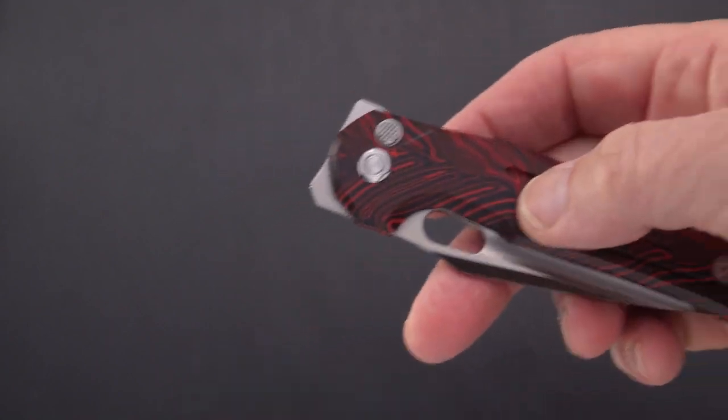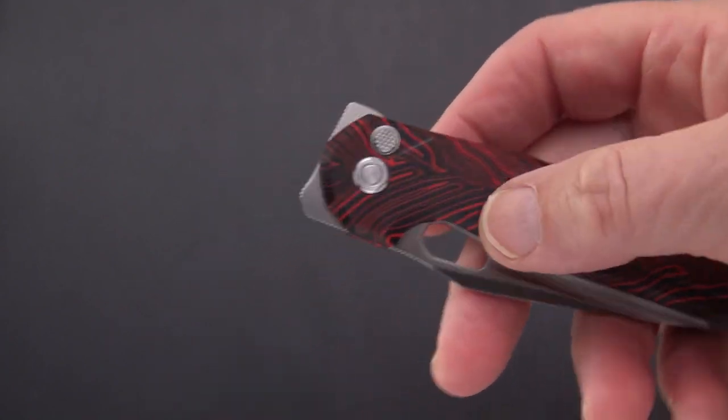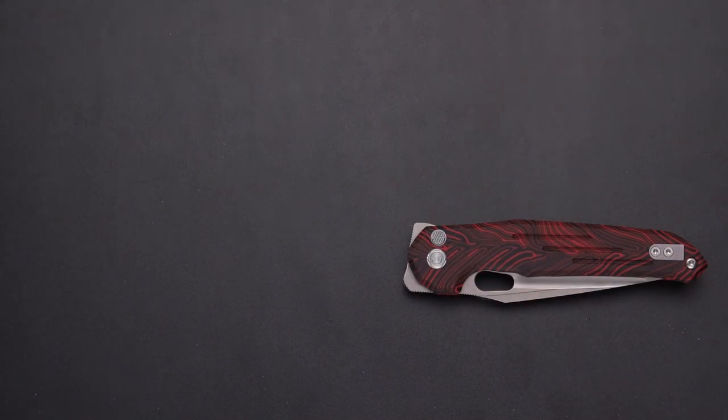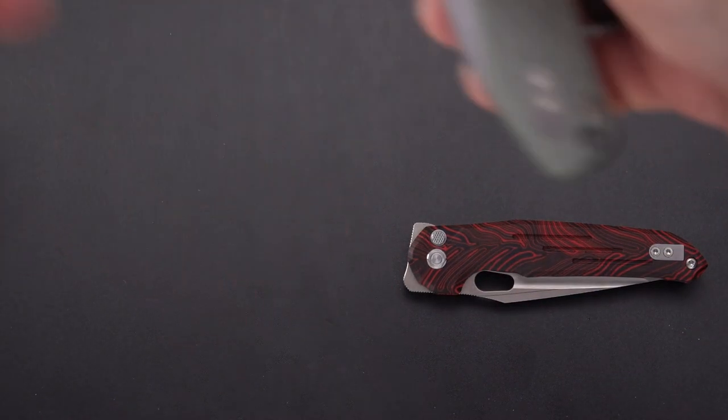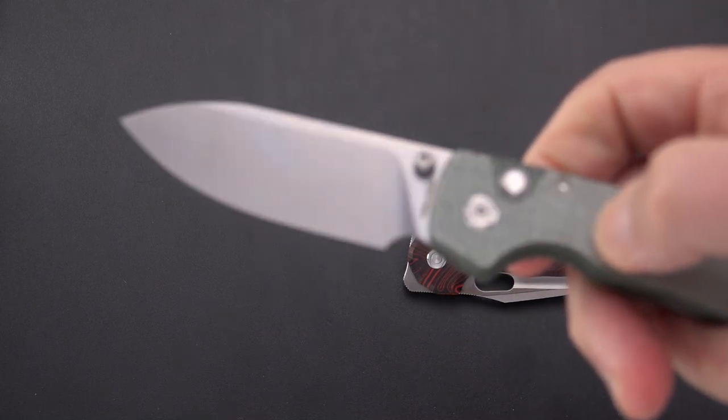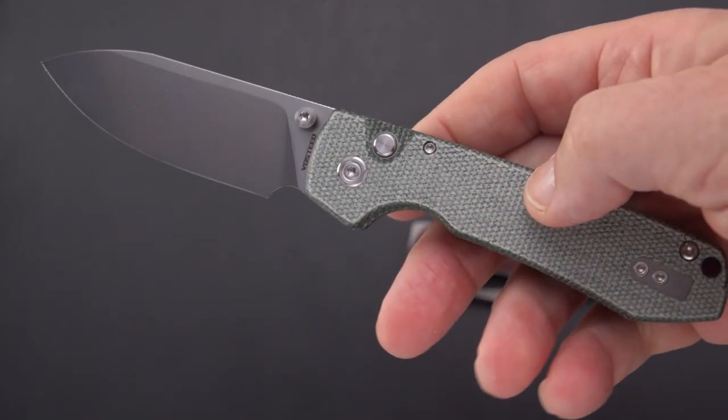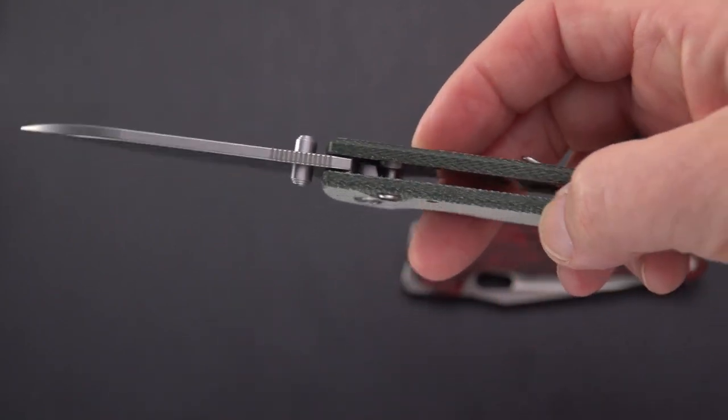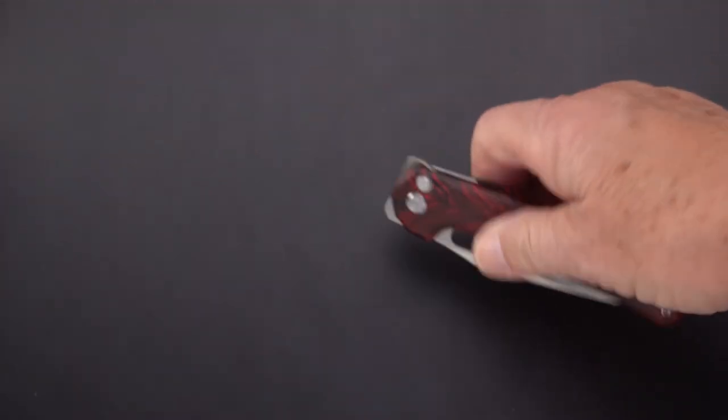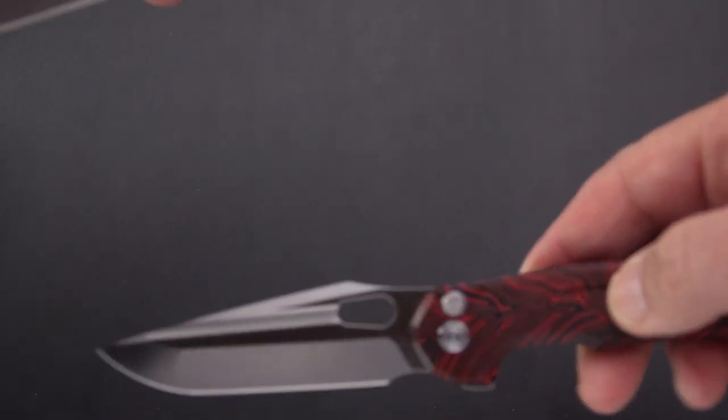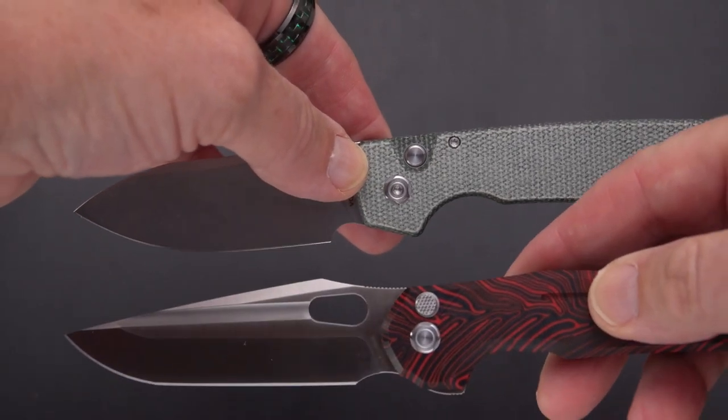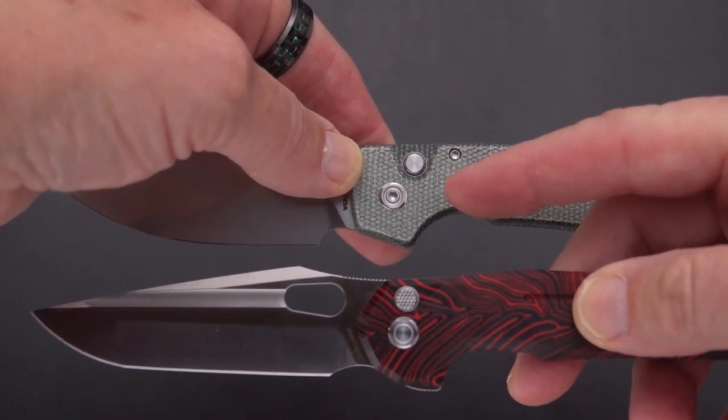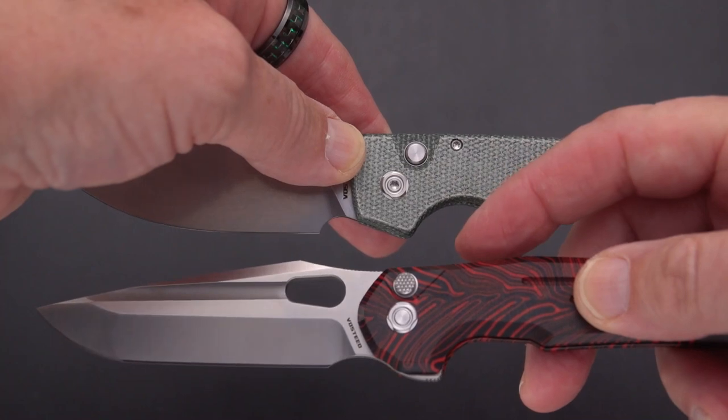For comparison, here is the Raccoon, something they came out with earlier. You can see with the Raccoon, if I can get them both in the frame here, that you've got the button set further back and there is a recess for it.